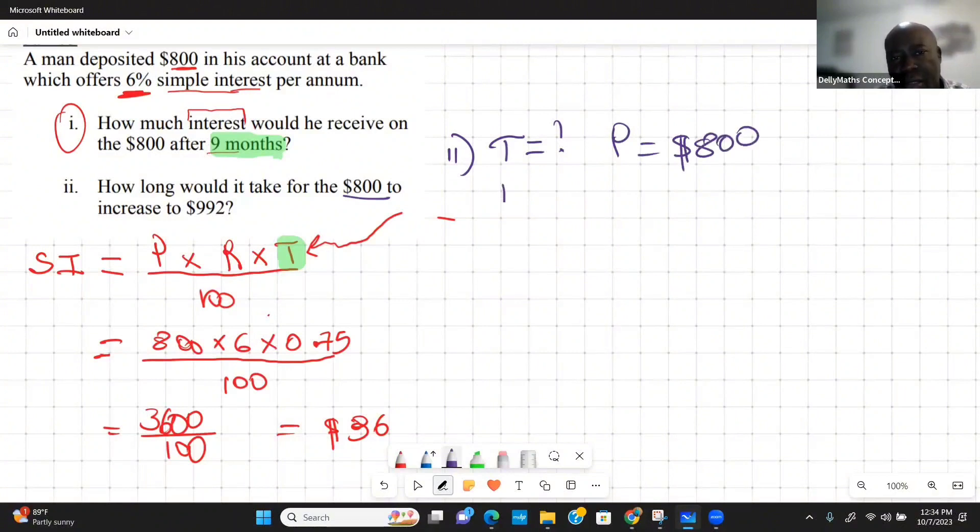Remember that we have the principal P which is $800, we have the rate R which is 6% per annum. The interest is given but it's given in disguise. When you read it, it's suggesting that we have $800 and we want to know how long does it take to reach $992.